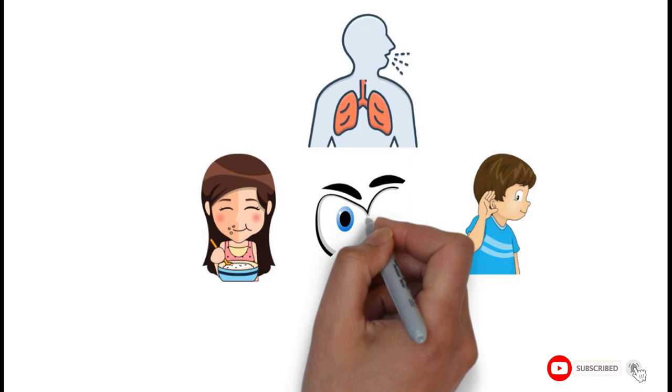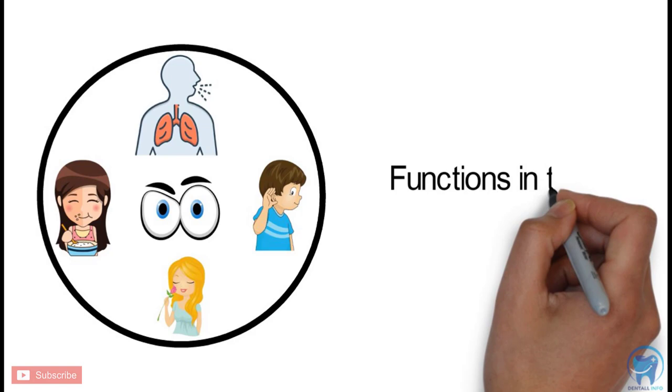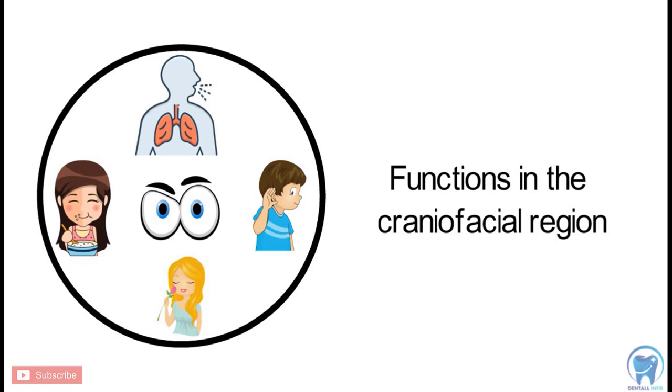Each of these functions is carried out by a Functional Cranial Component. Each Functional Cranial Component consists of all the tissues, organs, spaces, and skeletal parts necessary to carry out a given function.